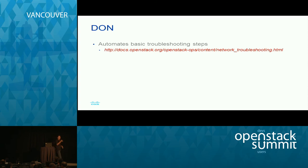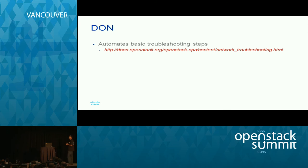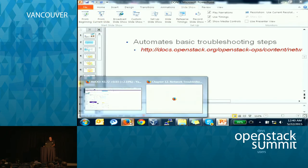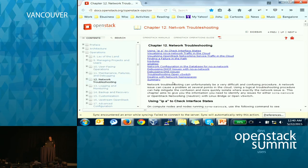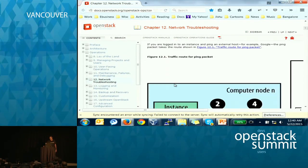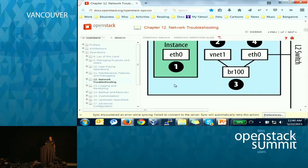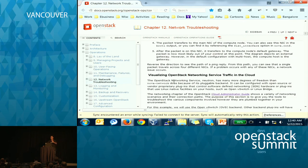You can just search for network troubleshooting on OpenStack — it's Chapter 12. There is a lot of very good information there. It basically told me what to automate.